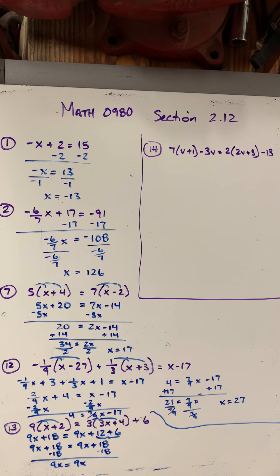So now I've got 9x equals 9x. At this point, it should become a little bit easier to see. So let's say x was 0. 9 times 0 is 0. 9 times 0 is 0. That's true. What if x is 1? 9 times 1 is 9. 9 times 1 is 9. 9 equals 9. That's true. What if x was 10? I would have 90 equals 90. That's true.